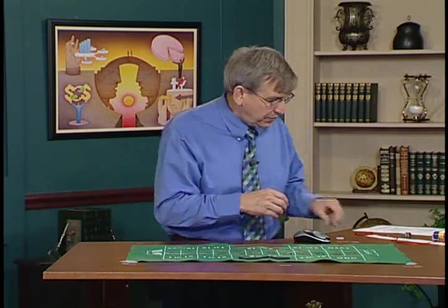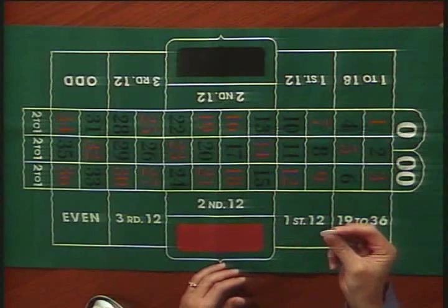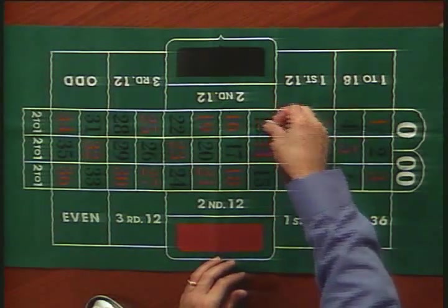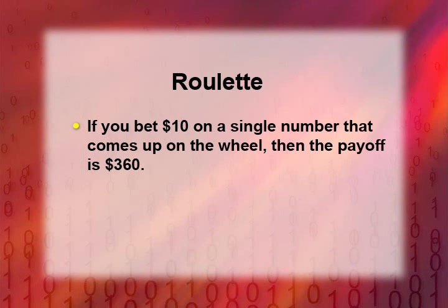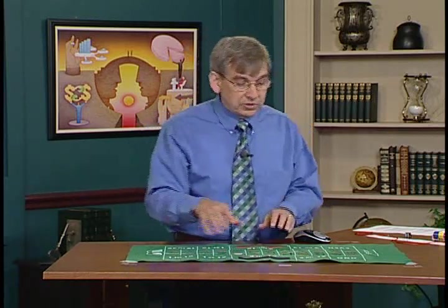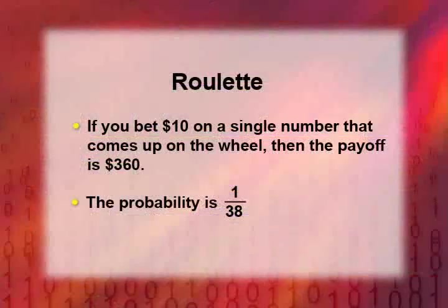The payoffs in roulette work as follows: if you make a bet and put a certain dollar amount on a particular number — say this chip represents a $10 bet on number 13 — the wheel rolls around, and if number 13 comes up, the payoff is $360. In other words, you get a total of $360 back. The probability of getting a 13 is 1 out of 38, because there are 38 equally likely numbers and 13 is just one of them. When you do win, you take back $360, which is $350 more than you invested.